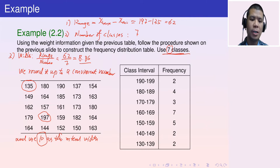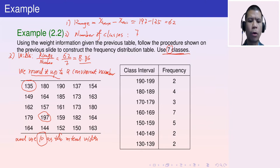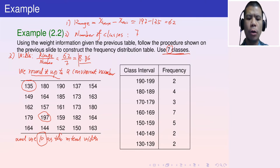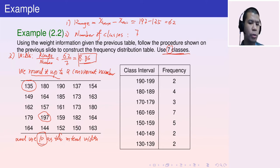Someone might ask: why not use 15, which is also a multiple of 5? The answer is that 15 is almost double the ratio of 8.86, which is too far away. You want a convenient number that is also close to the ratio, so we choose 10.